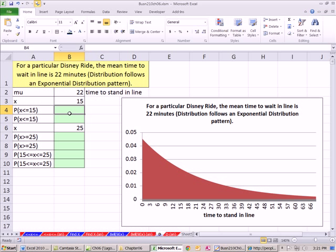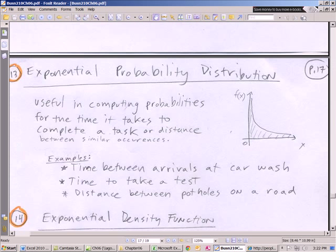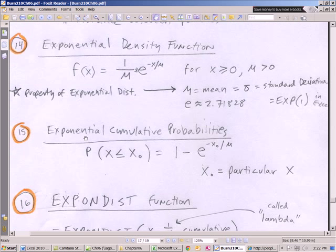Now we have a mu. We have our x and our first probability when we want to calculate x less than or equal to 15. Now just as before, this is all about area. So our curve here is going to look like this. We need to calculate 15 and the area from 0 to 15, because you can't wait negative time in line. We're going to do it two ways. We're going to use the formula we saw over here.